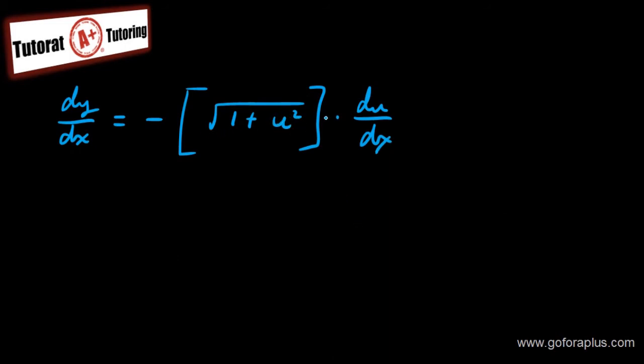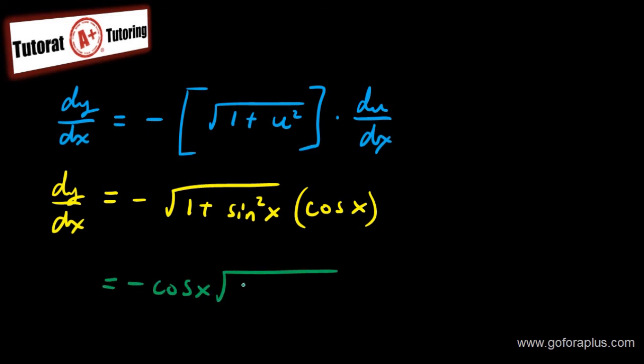Now I have to replace u back by the x function, the function in terms of x, and replace du over dx. This is going to be equal to, so dy over dx equals square root of 1 plus sine square of x. What is du over dx again? It's cos of x. So I can just replace that by cos of x. Now you need to simplify this. This is 1 plus sine square. You cannot really simplify much here. What I can do is I can just replace this cos in front just to make it nicer. So my answer is like this: minus cos of x times square root of 1 plus sine square of x.